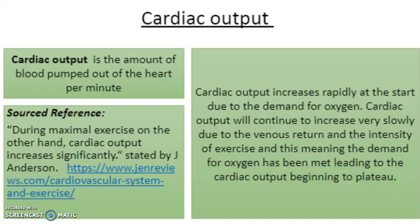Cardiac output is the amount of blood pumped out of the heart per minute. Cardiac output increases rapidly at the start due to the demand for oxygen, and will continue to increase very slowly due to venous return and the intensity of exercise. This means the demand for oxygen has been met, leading to cardiac output beginning to plateau. As you can see, stroke volume and cardiac output behave in very similar ways.